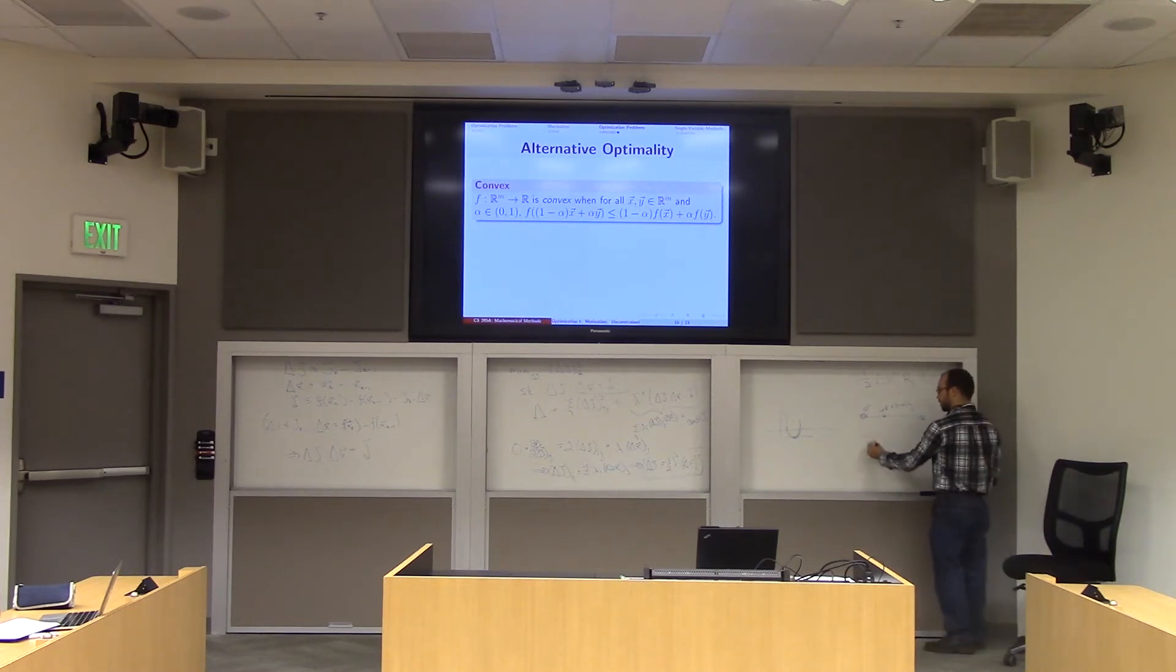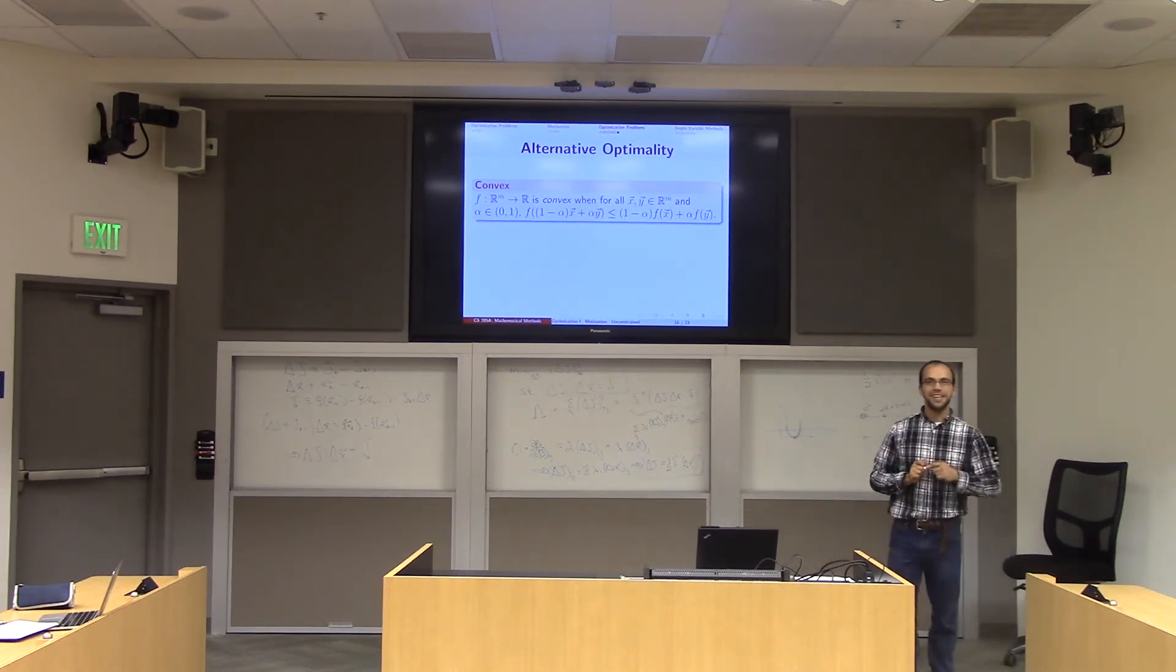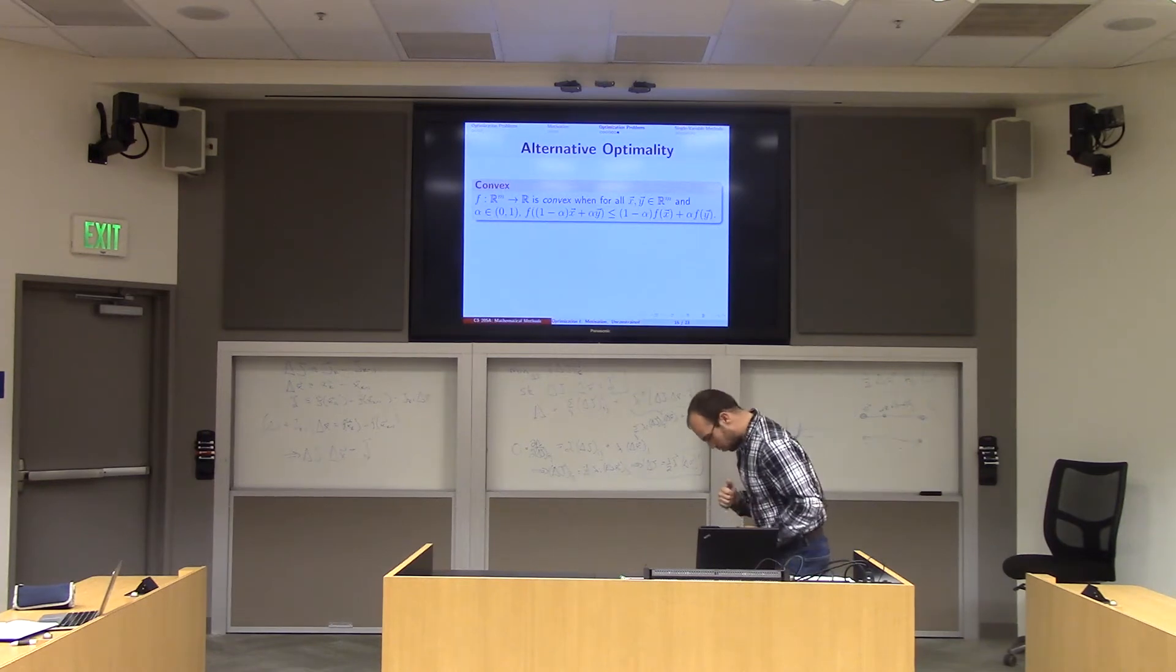So what does f look like? It looks like that. Because I can take any two points, draw a line between them, and f has to go underneath it. What's the nice thing about a convex function? Everything. In particular, it can have exactly one minimum, and I can find it just by walking downhill.